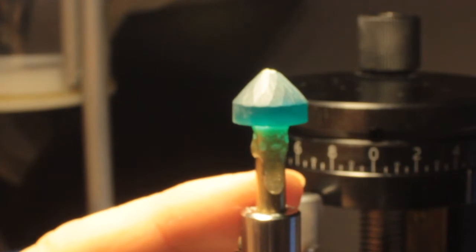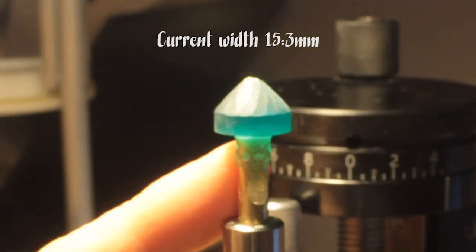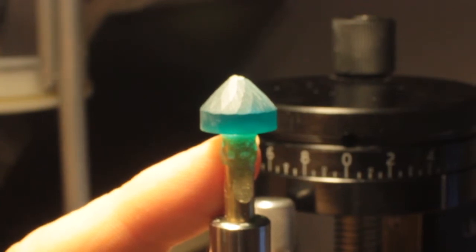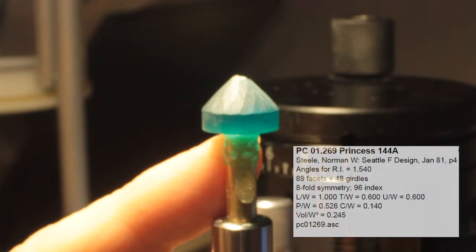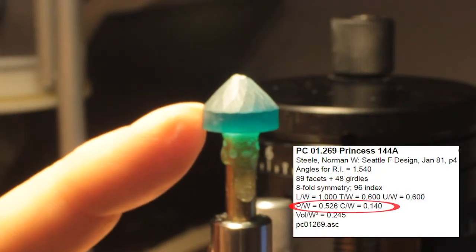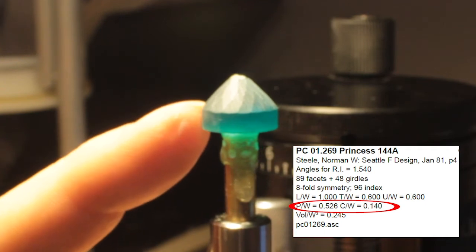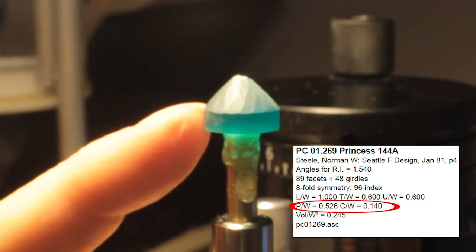And if you go to the instructions, the diagram, it gives you the P to W and the C to W ratio. The P to W is the pavilion to the width. And that's 0.526. So you multiply your width of the stone, 15.3, times the 0.526, and you get 8.04.